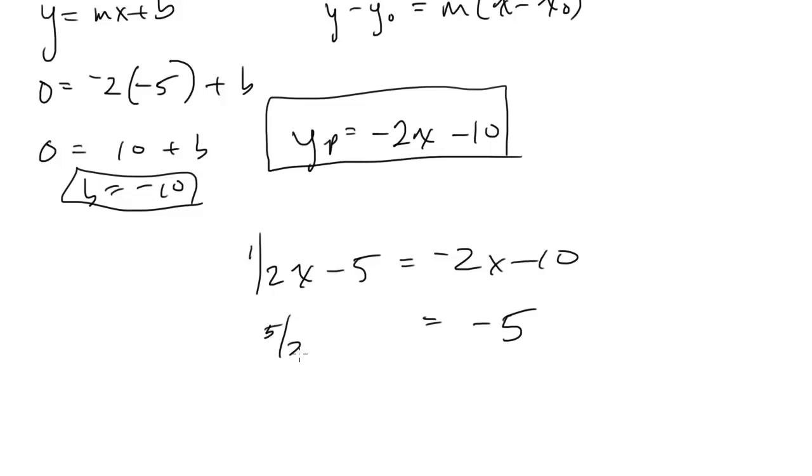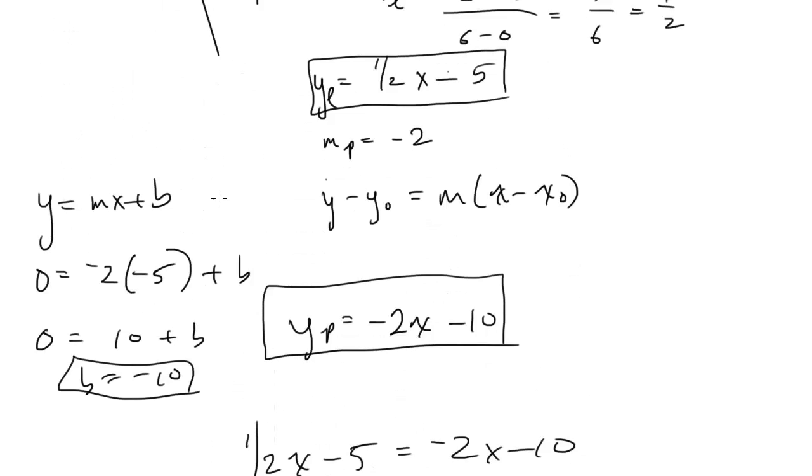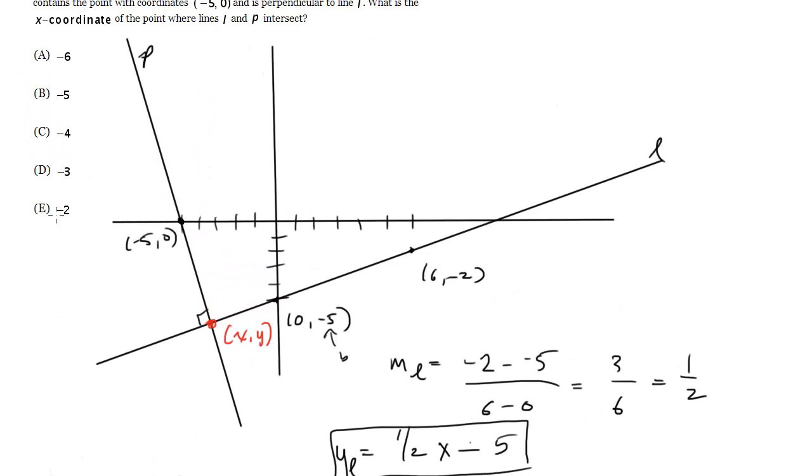I get five halves x. Multiply both sides by two fifths, and I get x equals negative 2. So that's my x-coordinate, and that's all I need. So I'd go back up here and pick choice E, and that's the answer.